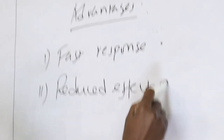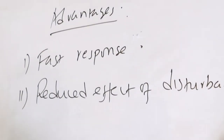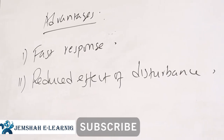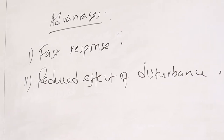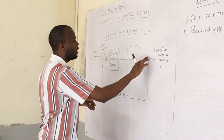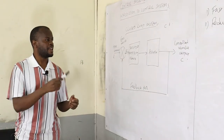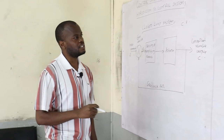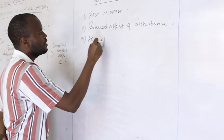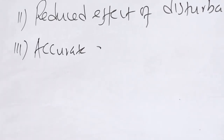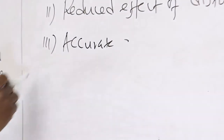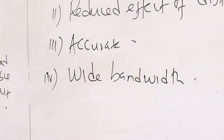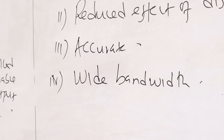Another advantage is the reduced effect of disturbance. The feedback path ensures that whenever the output is far from what is desired, we can bring it back by comparing the input command with the controlled variable. The system can also be accurate due to the corrective mechanism, and it has wide bandwidth — the range of response is wider compared to an open loop system.